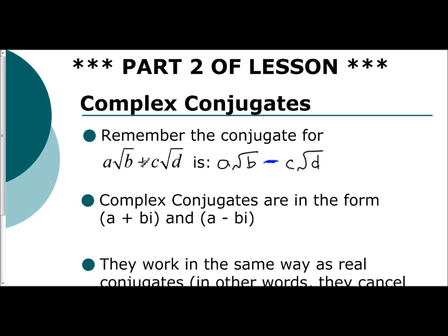Same terms, opposite operation. Taking this idea of a conjugate to imaginary numbers: if you have A plus Bi, the conjugate is going to be A minus Bi, and vice versa. If you have A minus Bi, you are going to have A plus Bi as the conjugate.